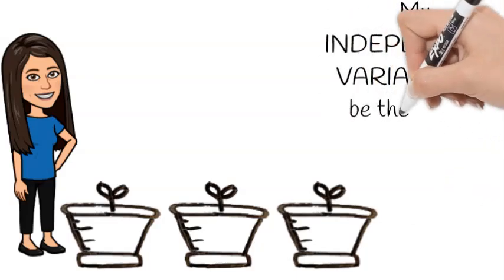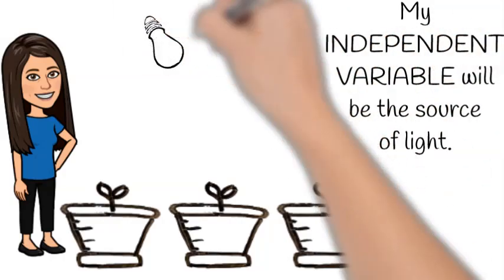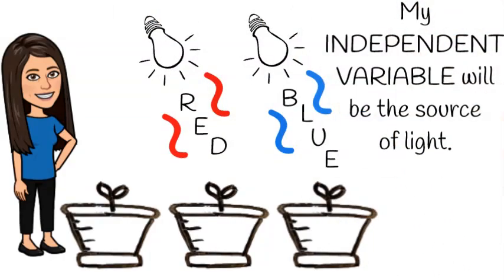There will be a plant growing in red light and another pea plant growing in blue light to see which color light allows the pea plants to grow the tallest.